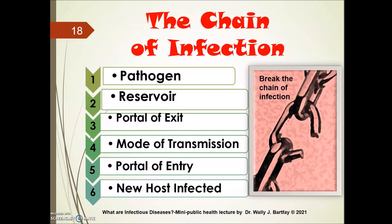The chain of infection has six processes: there is a pathogen, a required reservoir, a portal of exit, a mode of transmission, a portal of entry, and a new host that becomes infected.